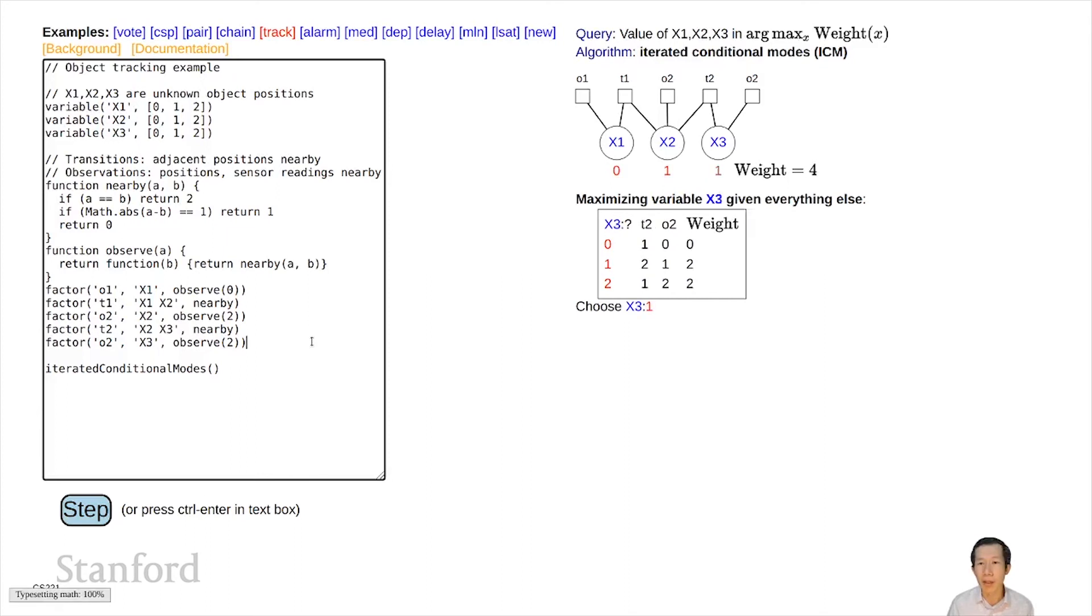It looks like I've converged because I'm not changing anything. So I've converged to an assignment with a weight of 4, which if you remember, is not the maximum weight assignment. The maximum weight assignment has weight 8. So again, iterative conditional modes is going to give you an okay solution, but not necessarily the best one.